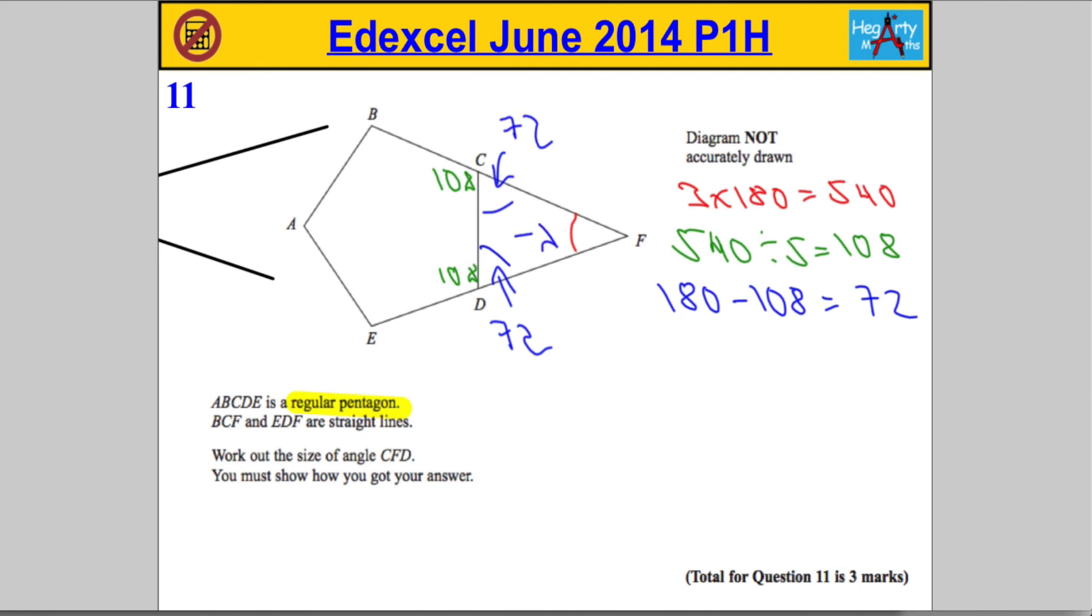And finally, I want to get the red angle here. Hopefully, you know that all angles in a triangle add to 180. So I'm going to do 180. I'm going to take away those two lots of 72. Otherwise, I'm going to take away 144.